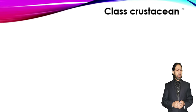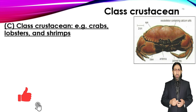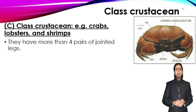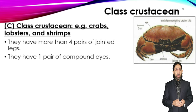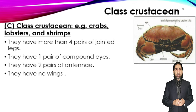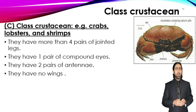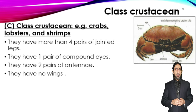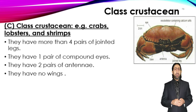Class Crustacea includes crabs, lobsters, and shrimps. They have more than four pairs of jointed legs, one pair of compound eyes, two pairs of antennae, and no wings. As visible in the crab, the head and thorax are fused into a cephalothorax known as the carapace, which provides strong protection. The claws allow for capturing and feeding on prey. Compound eyes are on stalks, and the two pairs of antennae are very obvious, especially in shrimps.